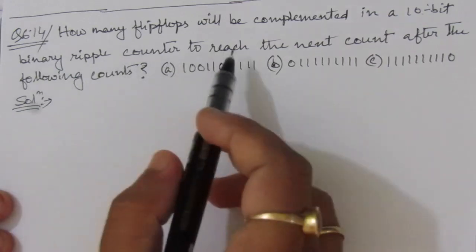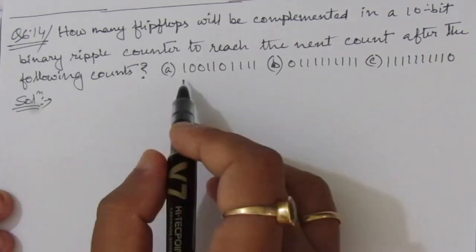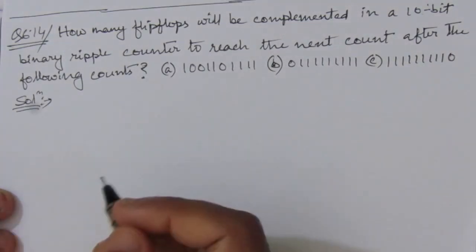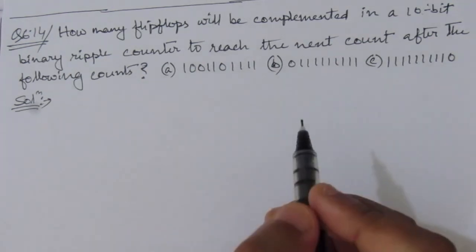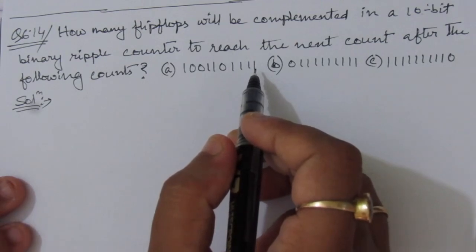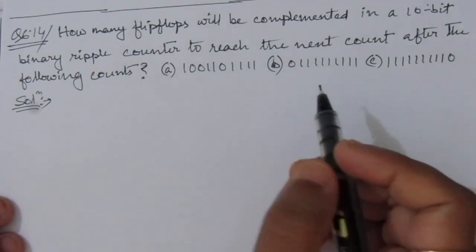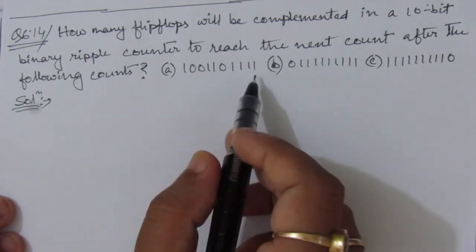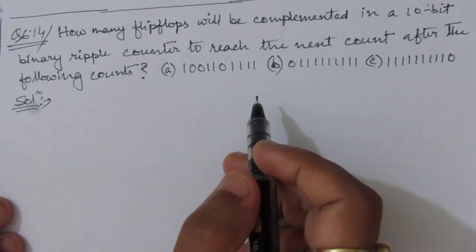These are the present states of the flip flops, and for the next count it will be incremented by one. So how many flip flops will be complemented? We have to find out how many flip flops will change their output from one to zero or zero to one. In a binary counter, with each count the flip flop output will be incremented by one whenever it gets a pulse at the input.